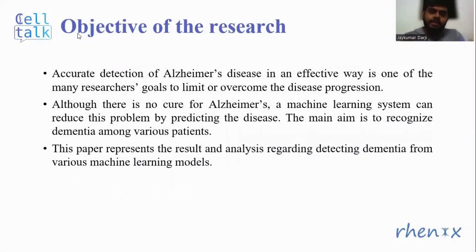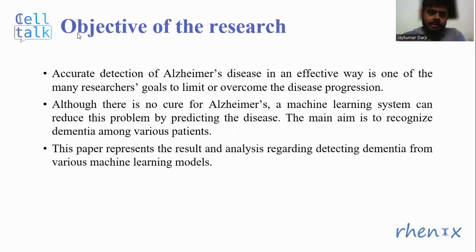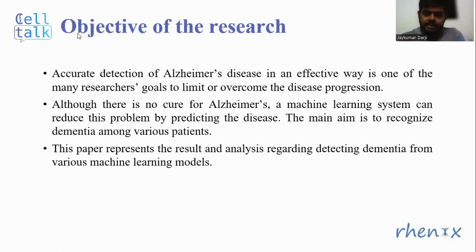This brings us to the objective of this research. Accurate detection of Alzheimer's disease is one of many researchers' goals to limit or overcome the disease progression. Although there is no cure for Alzheimer's, a machine learning system can reduce this problem by predicting the disease. The main aim is to recognize dementia among various patients. This paper presents the results and analysis regarding detection of dementia from various machine learning algorithms.